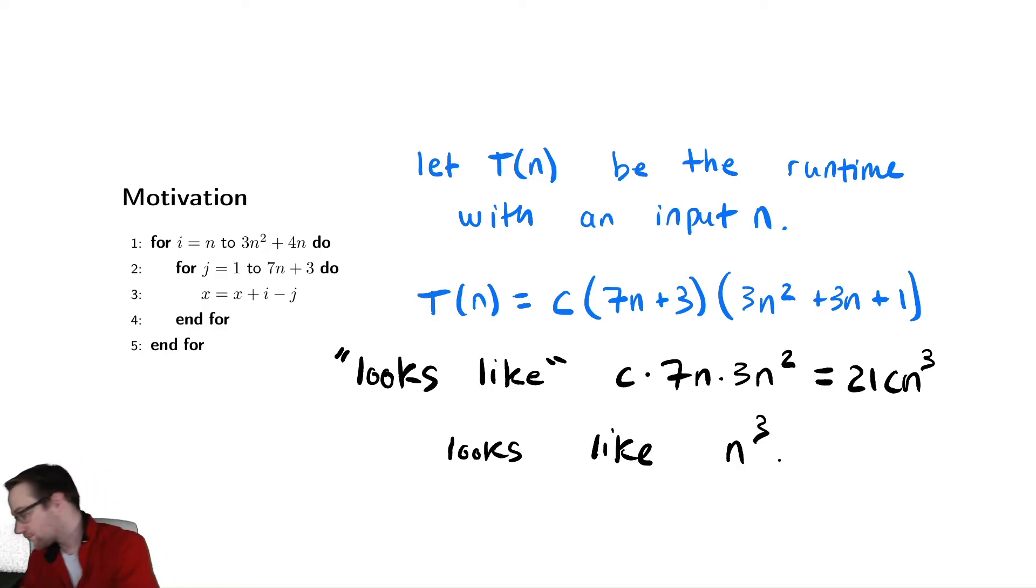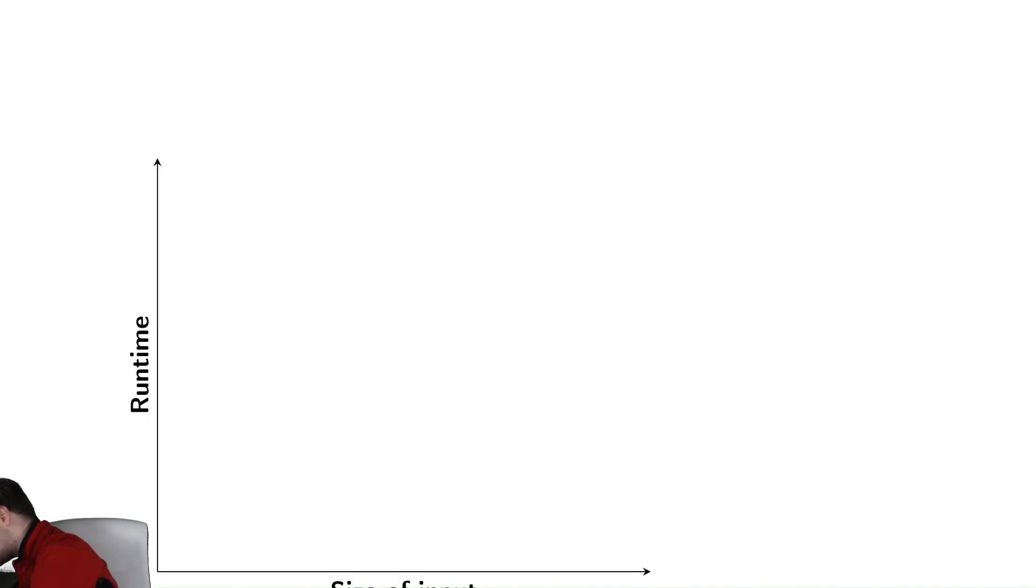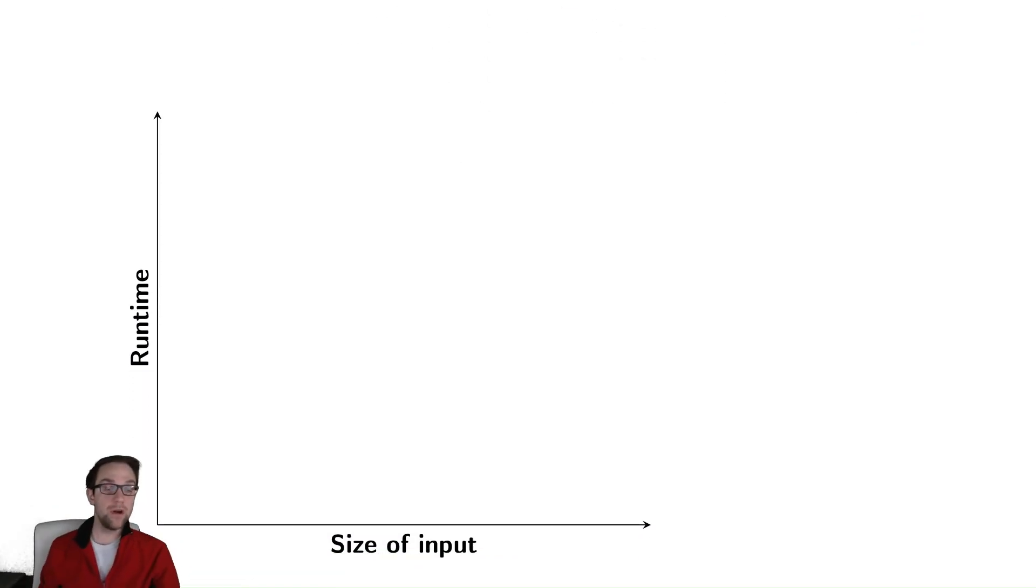Some people like to understand this graphically, and I'll draw a little sketch of what's happening. So we often, when finding the runtime, will find some ugly, messy-looking function. And it has some weird shape.